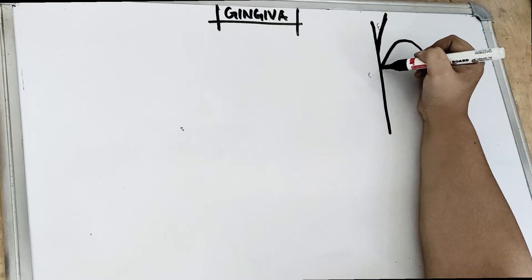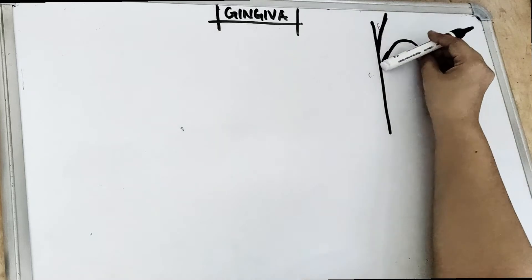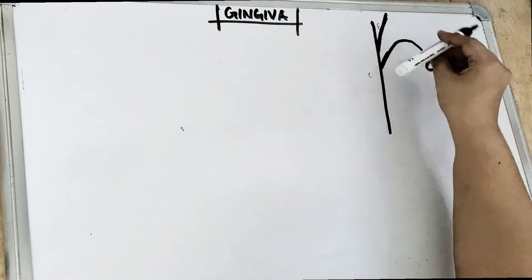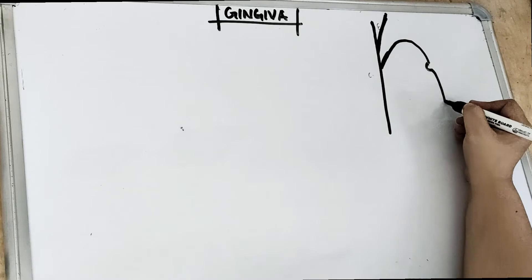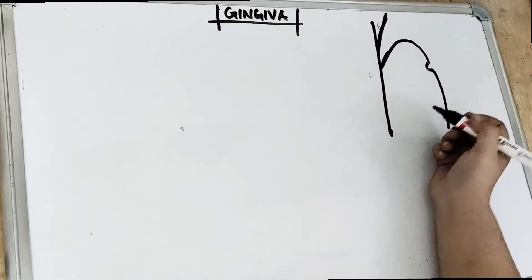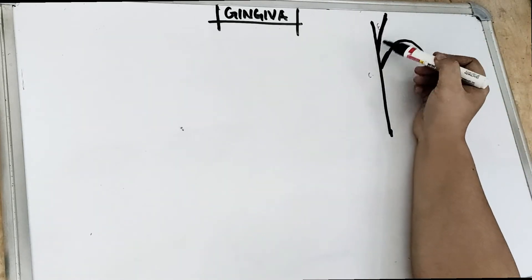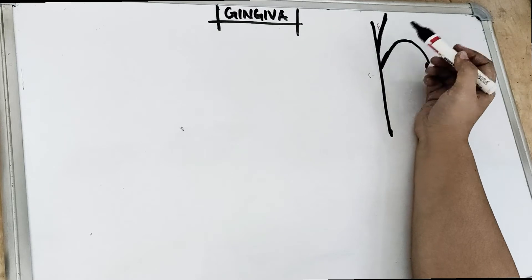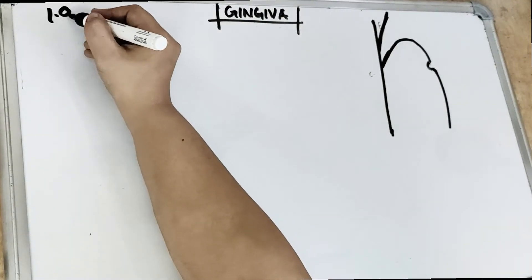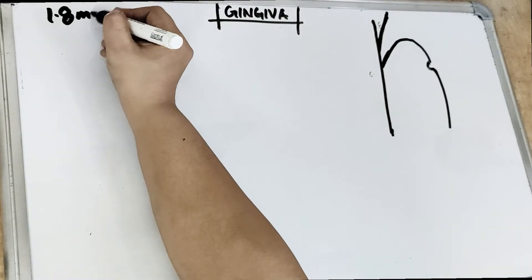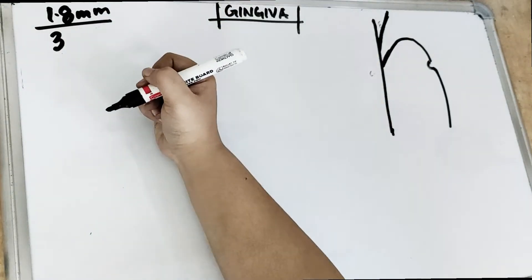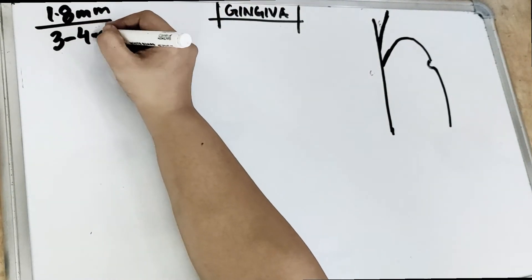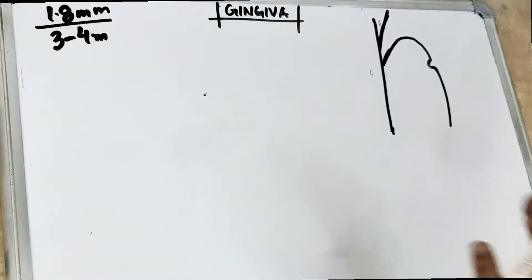If you look at the sulcus, this is a V shape. So we always see that the gingival sulcus is V-shaped. In the last video, we studied that the histological depth of the gingival sulcus is 1.8 millimeters. This is the histological depth. The clinical depth is when we insert the probe and check — it is 2 to 3 millimeters.